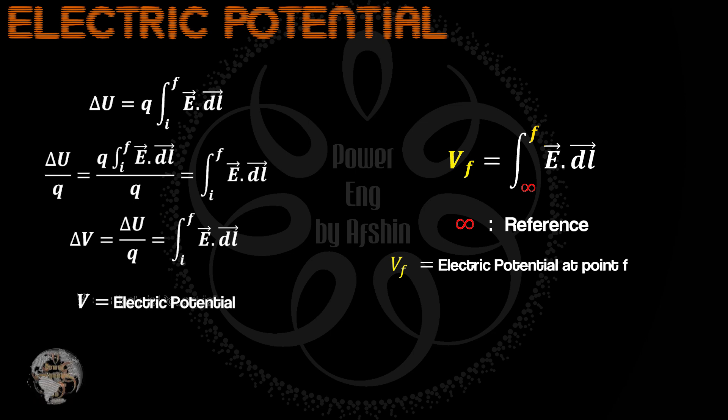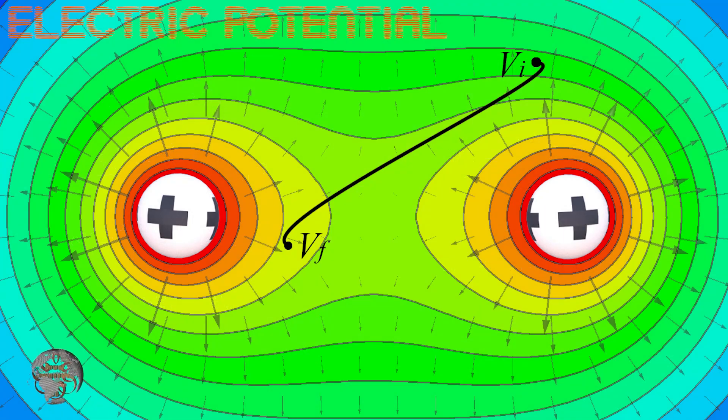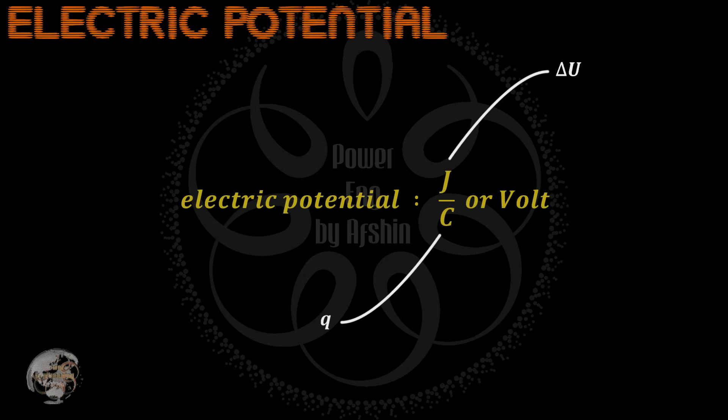Typically, we deal with electric potential difference. We choose one point as a reference, zero potential, and measure changes with respect to that point. The unit of electric potential is joules per coulomb, or volt.